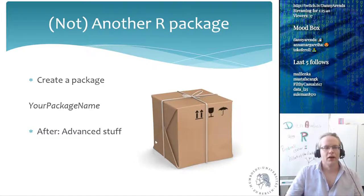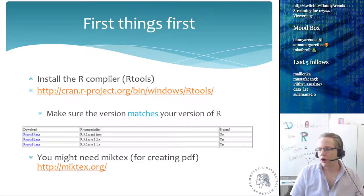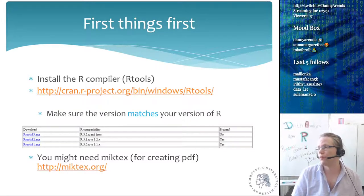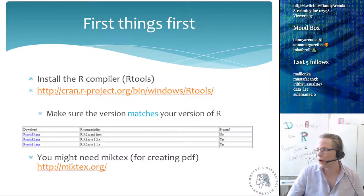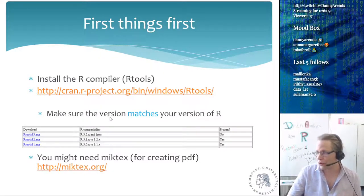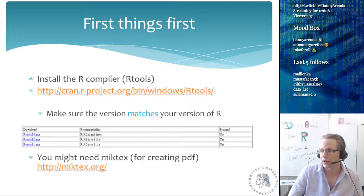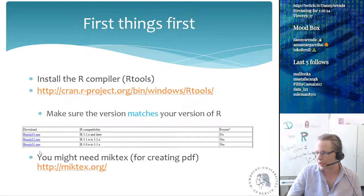First things first: when you want to create your own R package you have to install the R compiler, which is different from R itself. You have to install something called Rtools, and you only need to do that when you are on Windows. You go to the Rtools website and download the latest version, making sure the version matches your version of R.